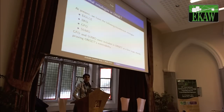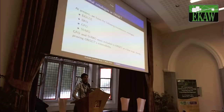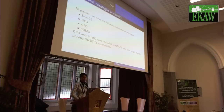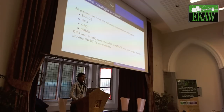Currently, we have Dolce, BFO, GFO, and Sumo foundational ontologies in Onset. At first we just had Dolce and BFO, and later added GFO and Sumo, thereby proving that Onset is, in fact, extensible.